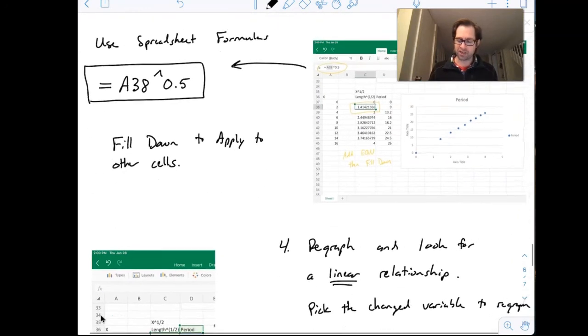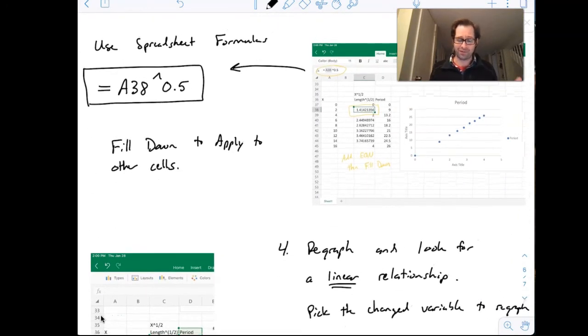So how do I do that in the spreadsheet effectively? Well, you can use formulas. And if you haven't used formulas before, this is pretty easy to do. Set equal in your cell, and then tell the cell what to do. A38 is the data from column A and row 38. So in this case, it's taking that x data, and it's going to take the square root of it. This is computer language for the square root to the power of a half is the same thing as a square root. And then I can fill down into the other cells. I've already done that here. So those values are already added in.